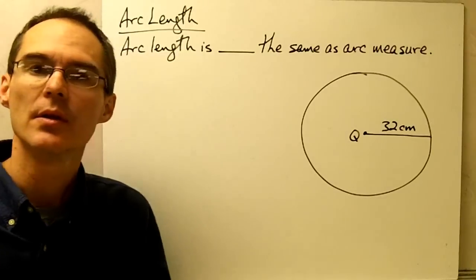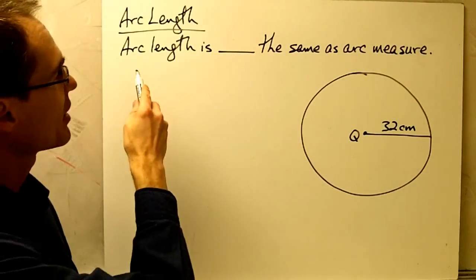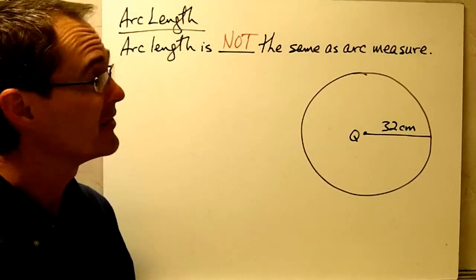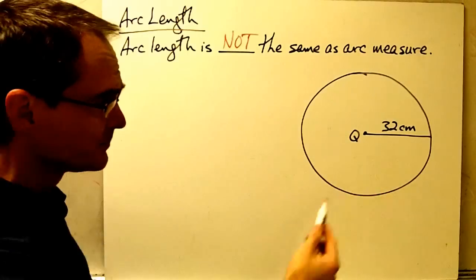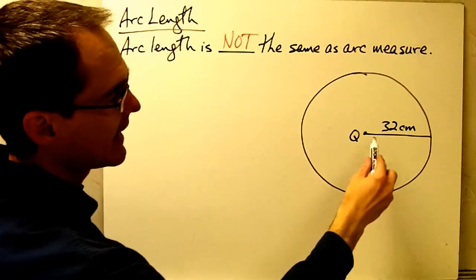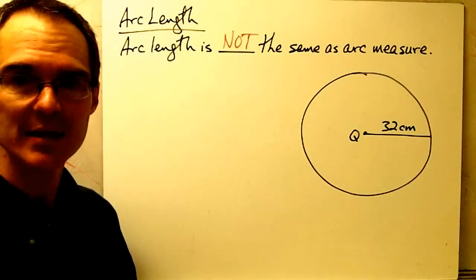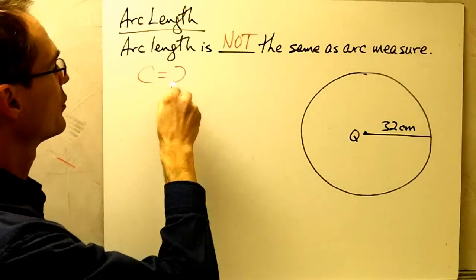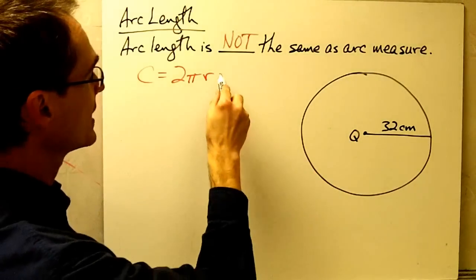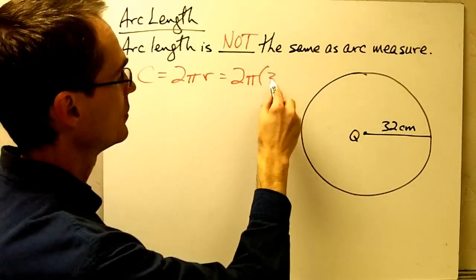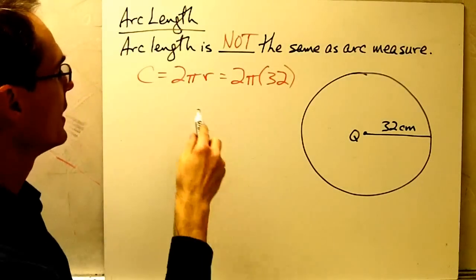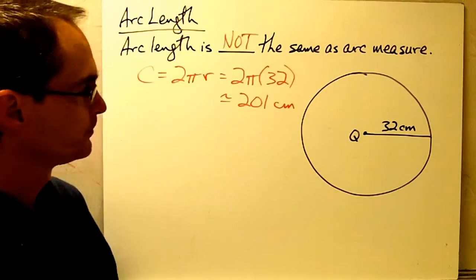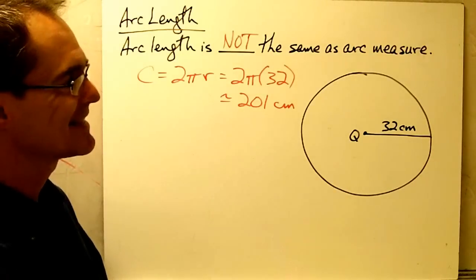Now let's talk about another property of circles: arc length. The first thing to note is that arc length is not the same as arc measure. They are related, but they're two different properties of a circle. Looking at circle Q with a radius of 32 centimeters — if I wanted to calculate the circumference, I know the formula is 2πr. With a radius of 32 centimeters, that gives a circumference of approximately 201 centimeters.